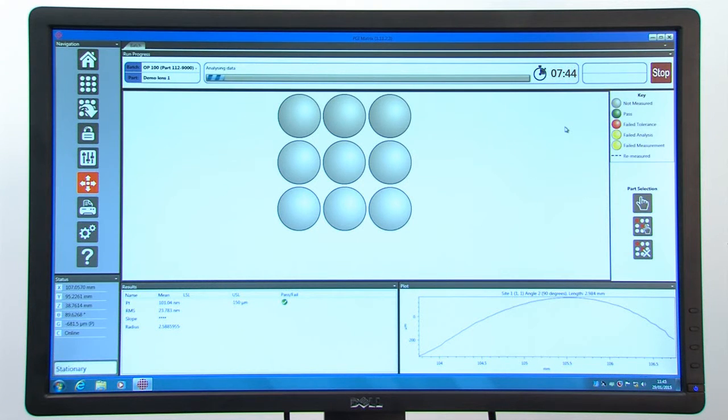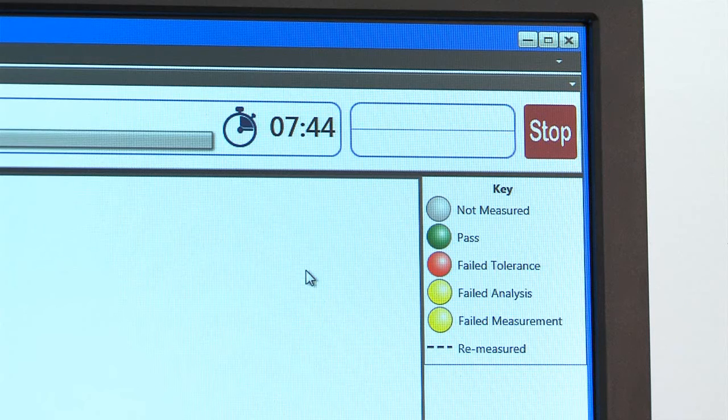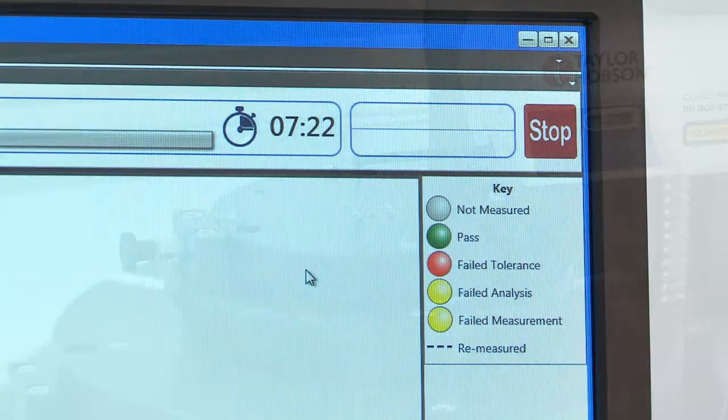Each part will indicate a pass or fail condition in real time, to quickly alert users of yield and a measured time indicator gives cycle time remaining.